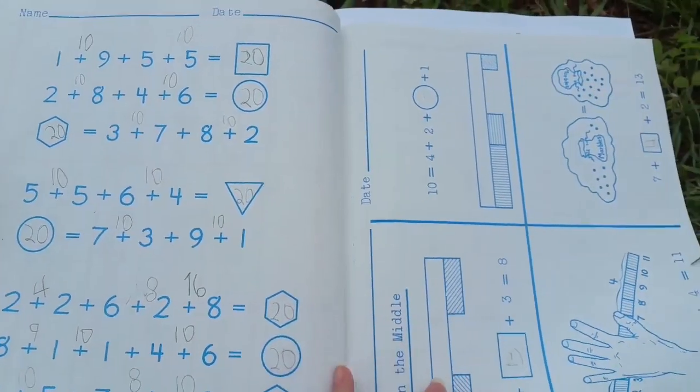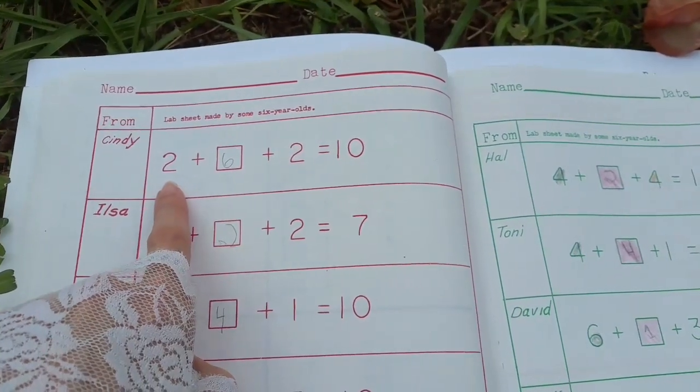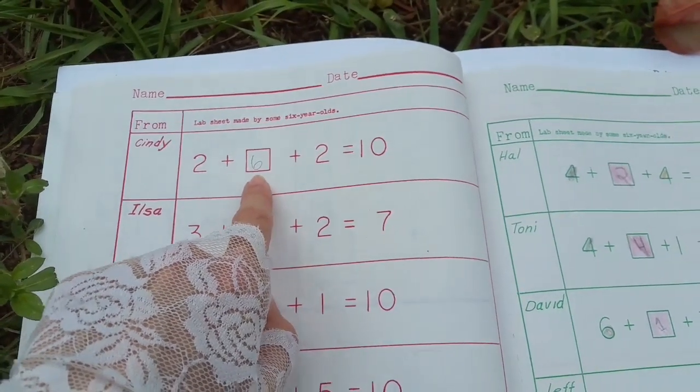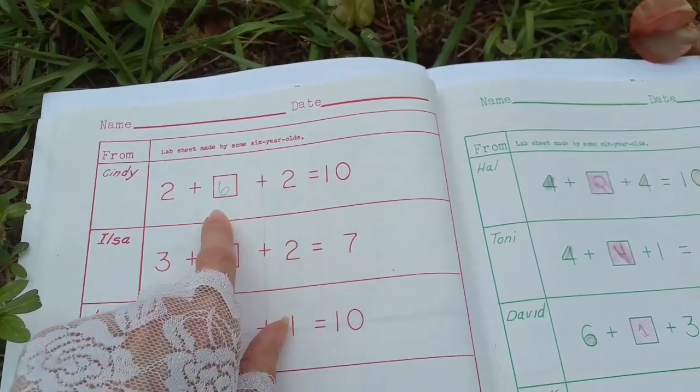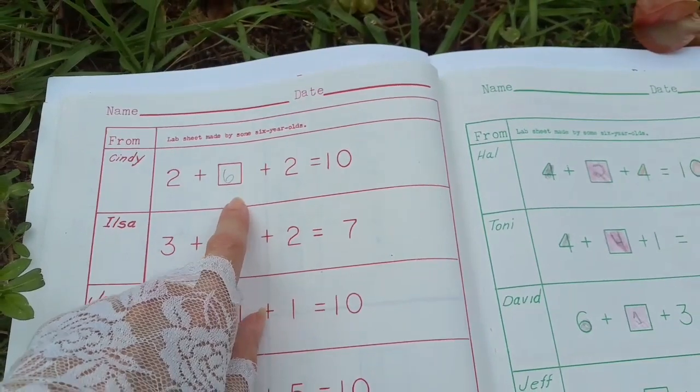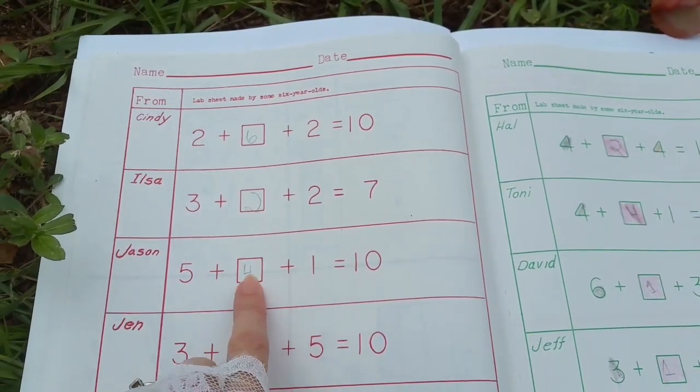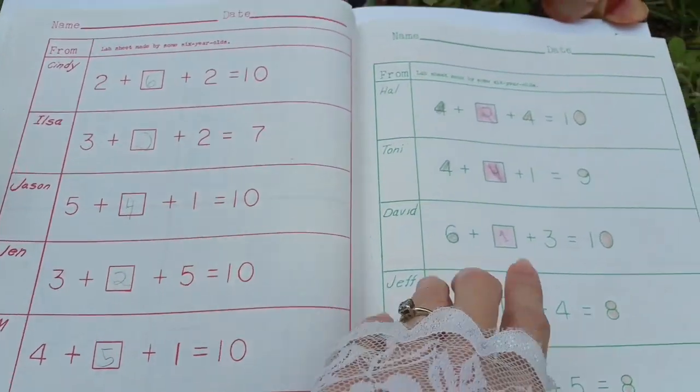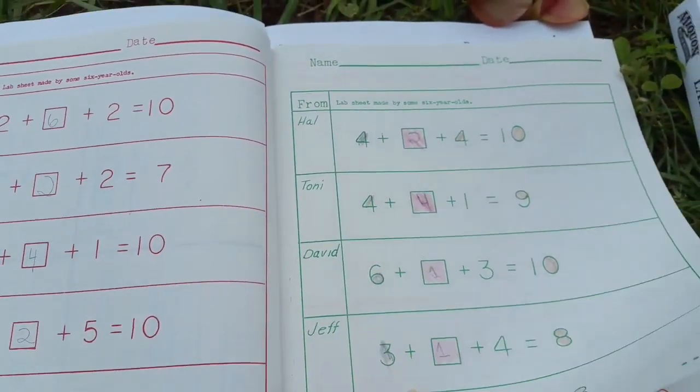So this was a little tricky, we were asked to find the missing number. We had 2 + what + 2 = 10 and we had to discover that the missing number was six. And we used Cuisenaire rods to do this and this was kind of when things started getting a little bit challenging.